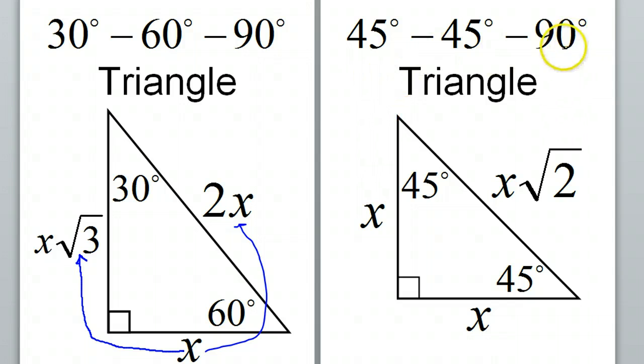A 45-45-90 triangle is simpler. It's an isosceles triangle, so the two legs are going to be equal to each other, and then the hypotenuse will be x radical 2. So this might be 5, 5, 5 radical 2, or 7, 7, 7 radical 2. So that's what we mean by special right triangles, and now let's see how we solve them.